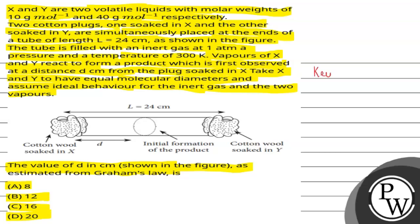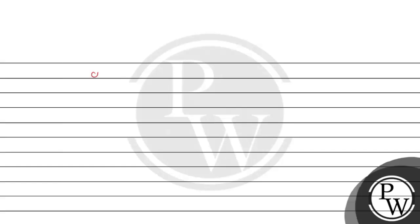So the key concept is Graham's law. According to Graham's law, we can say that the rate of effusion of a gas is inversely proportional to the square root of the molar mass of the gas. And further, we can say that the distance is inversely proportional to the square root of the molar mass of the gas.